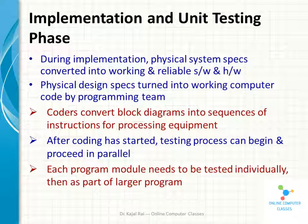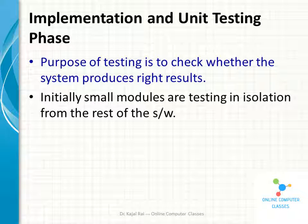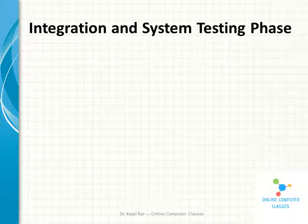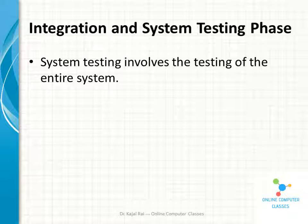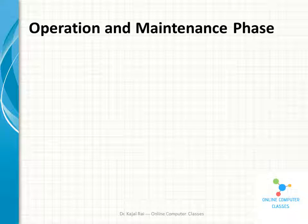Each module is tested individually first and then as part of the larger system. The purpose of testing is to check whether the system produces correct results. We first do unit testing and then system testing. In the Integration and System Testing phase, all the functions are put together and integrated, then system testing is done. System testing involves testing the entire system — it is a very expensive and time-consuming activity that consumes one-third of the cost of the development project.